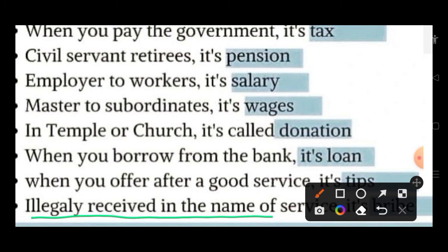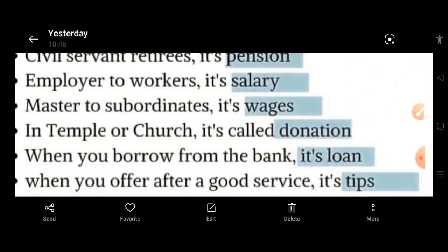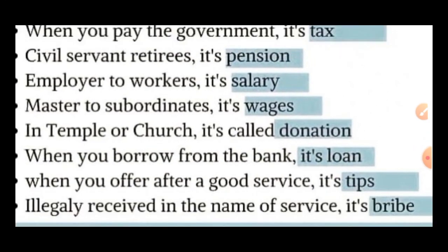Then, illegally received in the name of service — aap apne kaam ke liye kisi se paise le rahe ho, seva ki naam pe, use kaha jata hai bribe. Bribe means jisko kaha jata hai ghoos — kuch log government pe ghoos lekar kaam karte hain, usi ko bribe kaha jata hai.